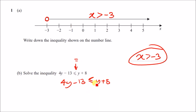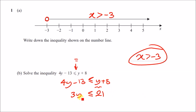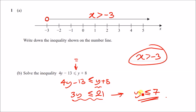To solve this, move all the y terms to the left and the non-y number terms to the right. Moving y across, subtract y, so four y take away y is three y. Moving minus 13 across, add 13, so 8 plus 13 is 21. To isolate y, divide by three: y is less than or equal to 21 divided by three, which is seven. So y ≤ 7.